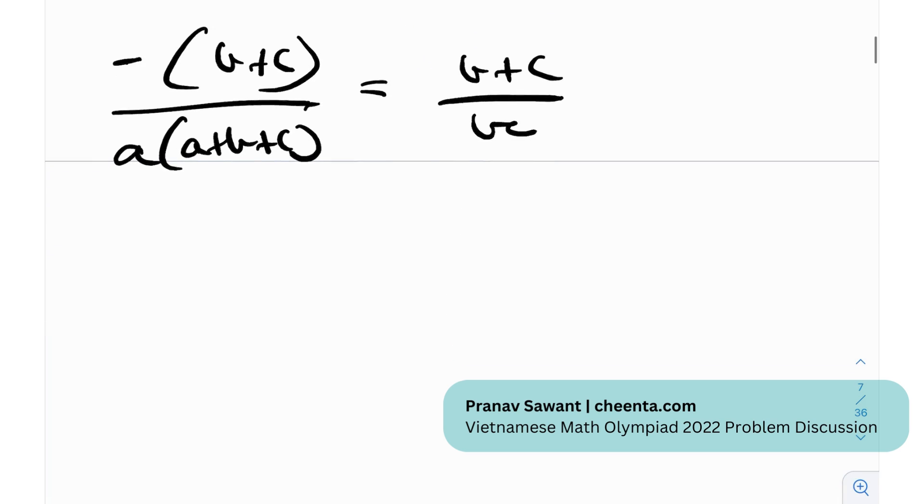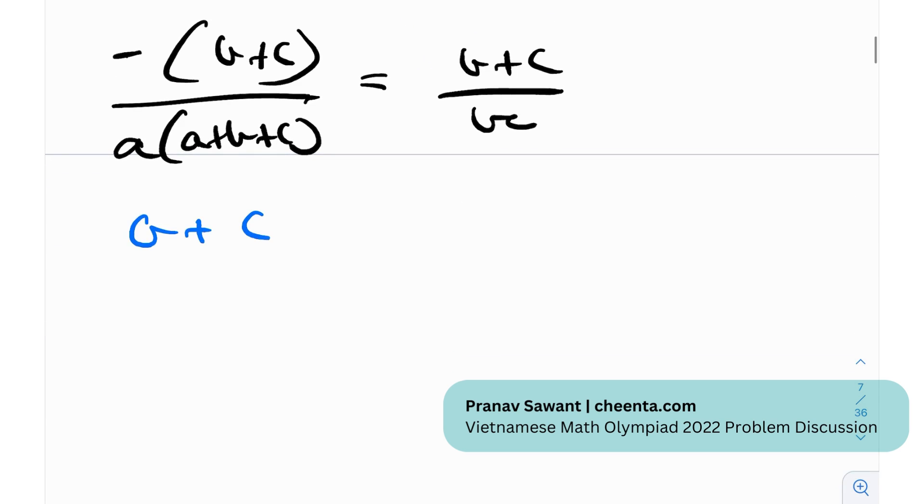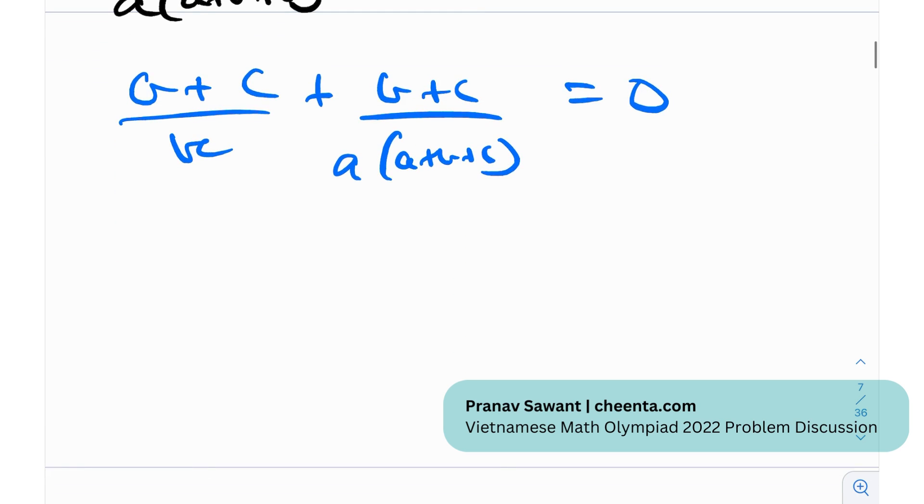Now this is actually great because when you simplify this, the a and a gets cancelled out. So it remains negative (b+c) divided by a(a+b+c), which equals (b+c)/(bc). And after this, I can just take this to the right-hand side so that everything becomes positive.